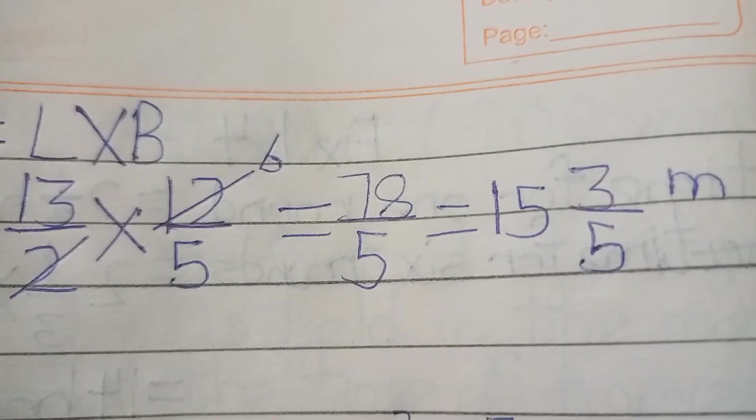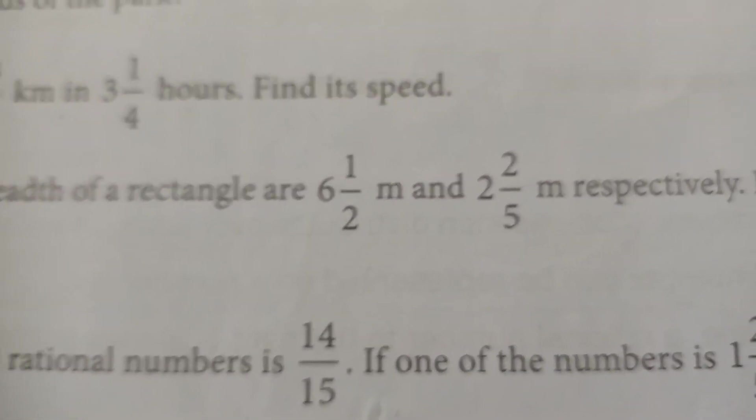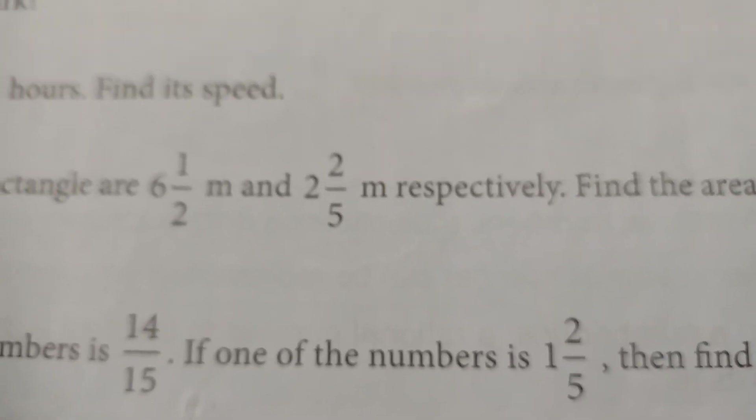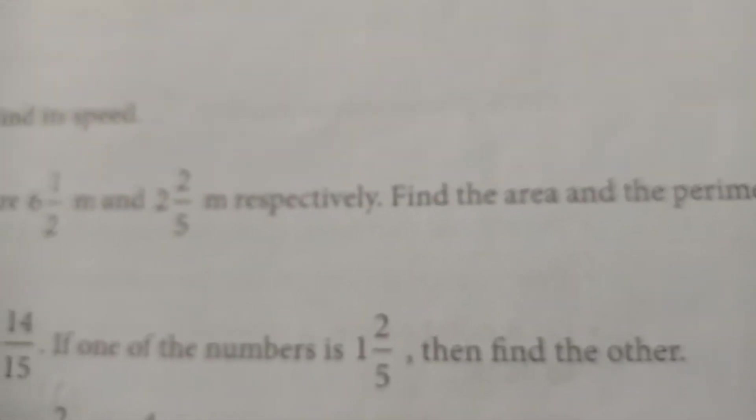Okay friends, let's do the next question. Fourth question hai: The product of two rational numbers is 14 over 15. If one of the numbers is 1 whole 2 over 5, then find the other.